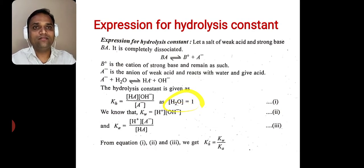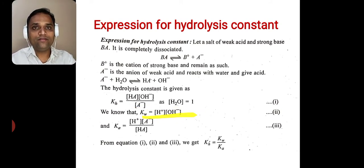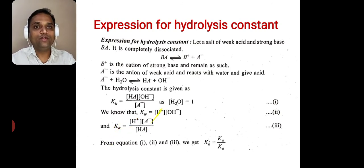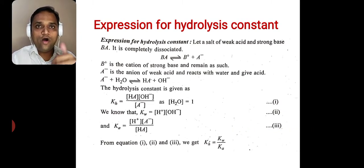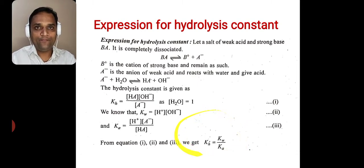We know that the ionic product of water Kw = [H⁺][OH⁻], and Ka is the equilibrium constant for the acid HA. From these three equations, we obtain KH = Kw / Ka. This is our final expression for the hydrolysis constant.